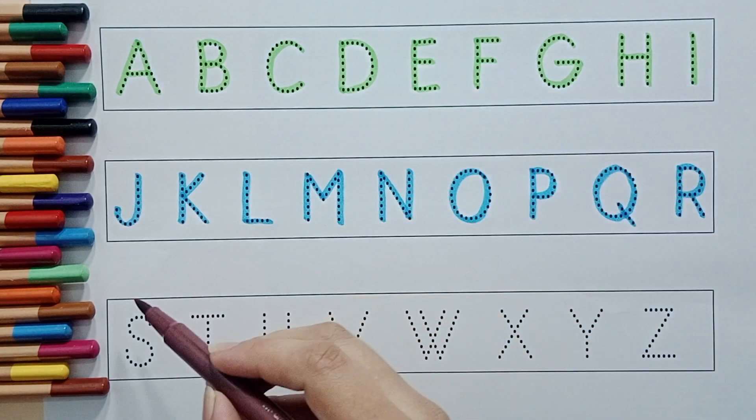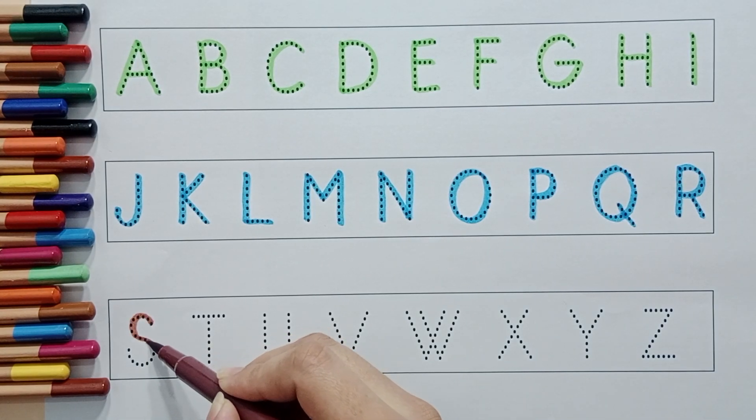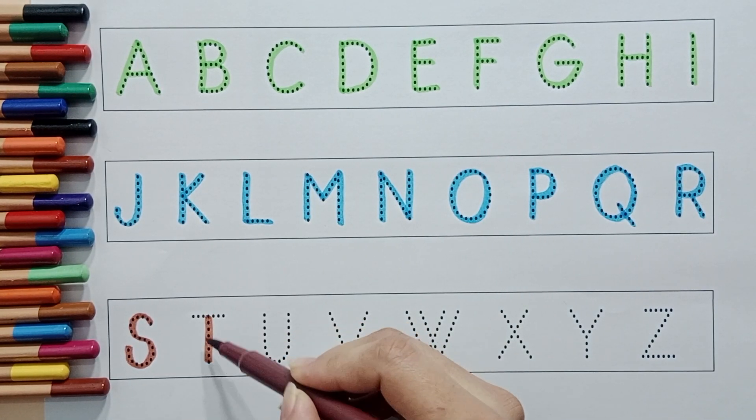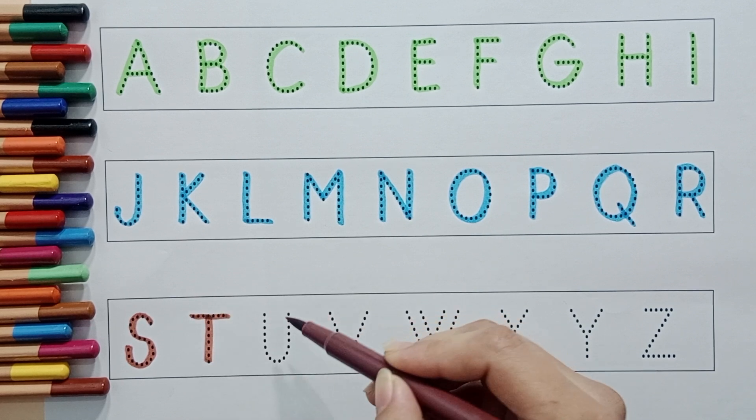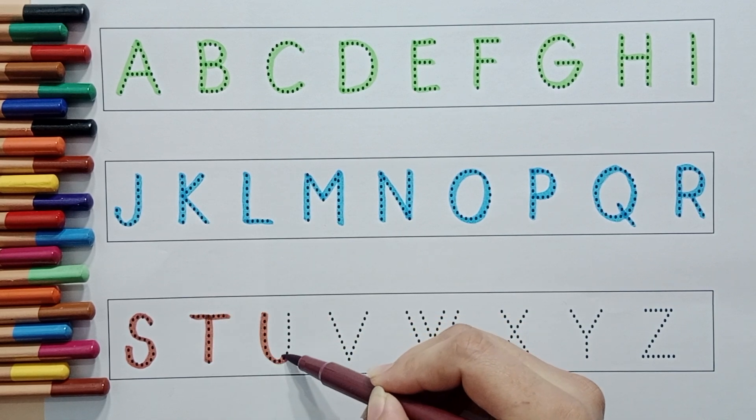Brown color. S. S for shoes. T. T. T for tree. U. U. U for umbrella.